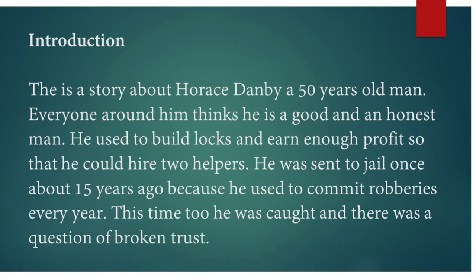This story is about Horace Danby, a 50-year-old man. Everyone around him thinks he is a good and honest man. He used to build locks and earn enough profit so that he could hire two helpers. He was sent to jail once about 15 years ago because he used to commit robberies every year. This time too, he was caught and there was a question of broken trust.